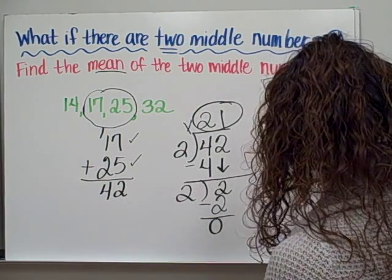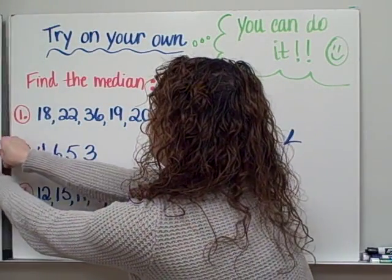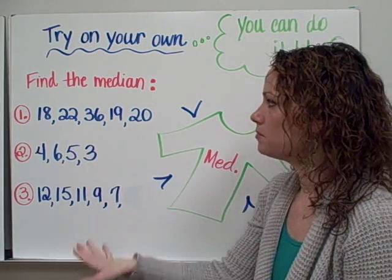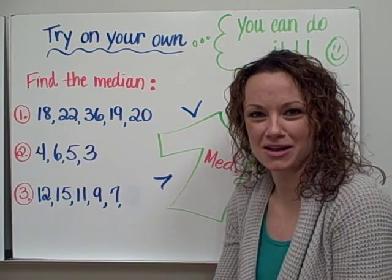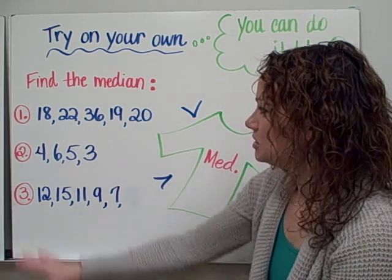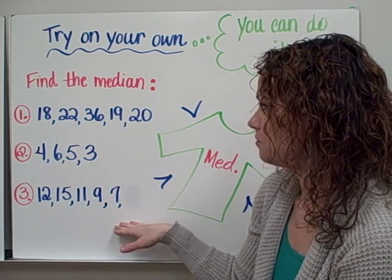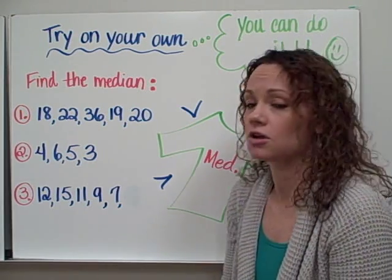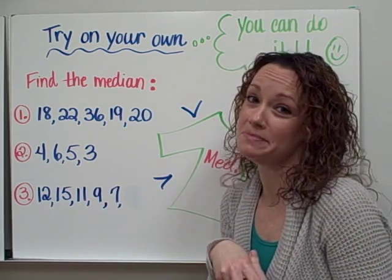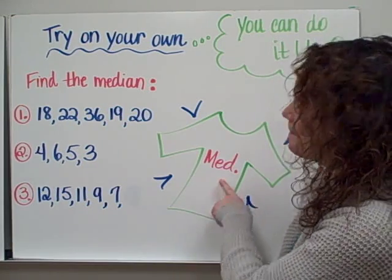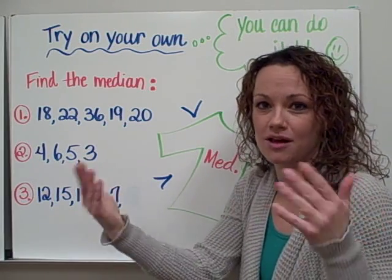Alright, so those are the two situations for finding the median. Let's give you some example problems to try on your own in box number three of your homework sheet. Try your best — you can always look back at the examples to remind yourself of the steps. Here are your sets of numbers for questions one, two, and three. Make sure you are ordering those numbers from least to greatest as your first step, then searching for your middle number — your median. Great job, and always remember that median means middle, just like a shirt size medium is in the middle of large and small.